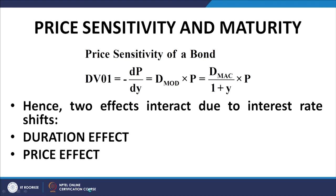The percentage change in price of the bond per unit change in YTM is given by the modified duration. Therefore, the change in price of the bond per unit YTM will be given by the product of modified duration and the price of the bond, and that can also be written in the form of Macaulay's duration as the expression in the right-hand corner of the slide.